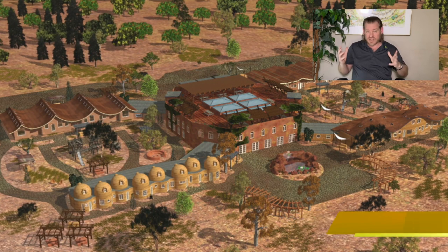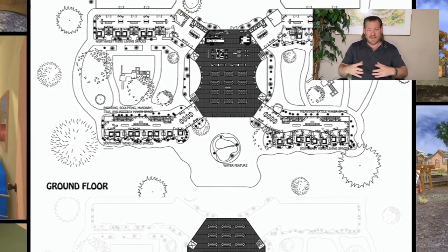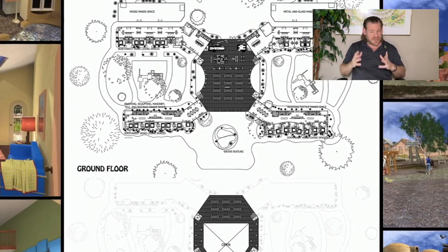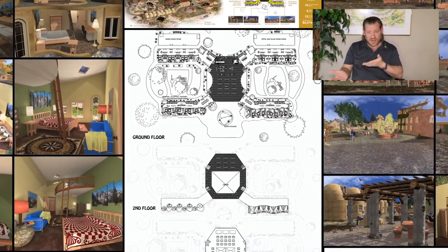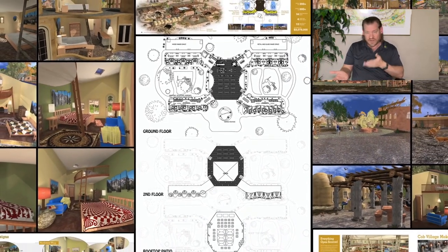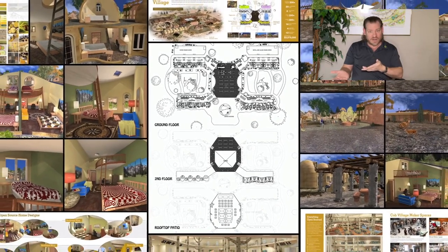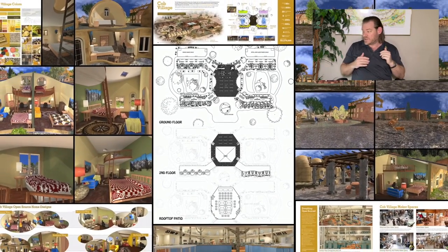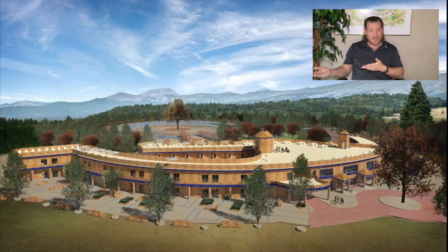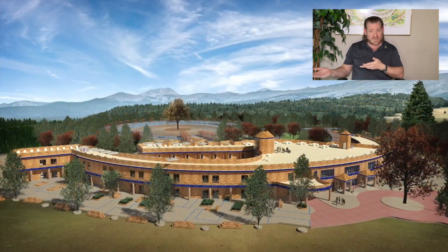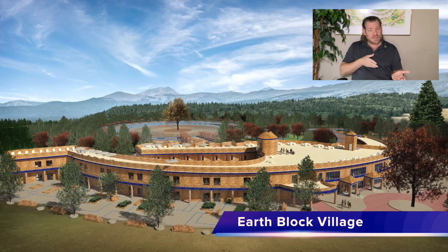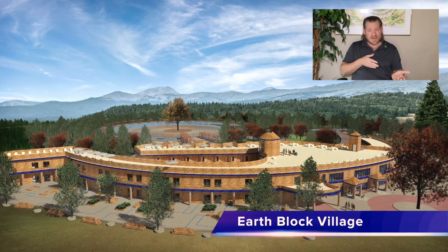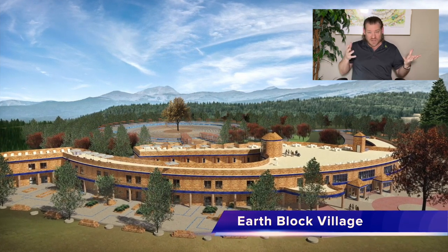We want to provide something for everyone — not just people interested in teacher demonstration hubs or community living, but also people that just want to build a sustainable home without toxic materials that will last longer and look more beautiful. Or people that just want to grow food not sprayed with pesticides, herbicides, and fungicides. Or maybe somebody just wants a home-based education program that is better than the standard and traditional programs out there.